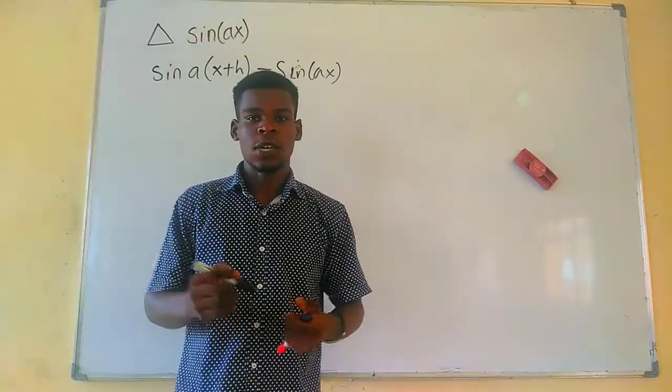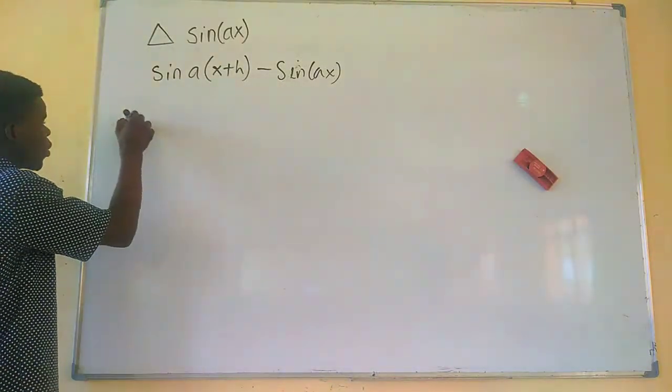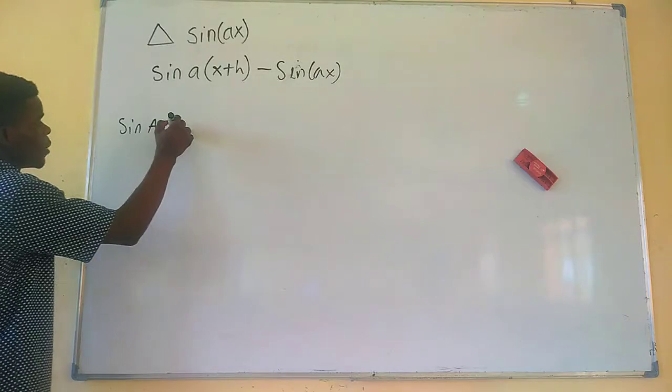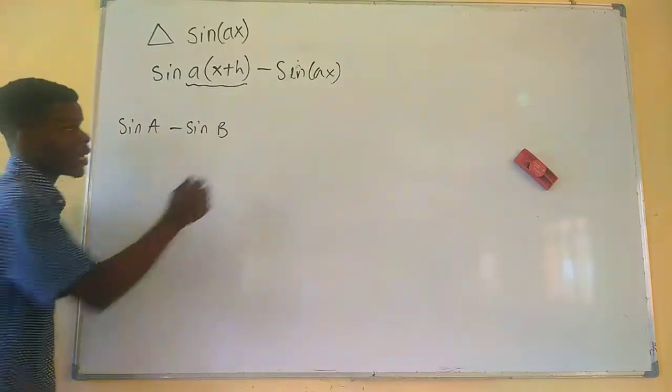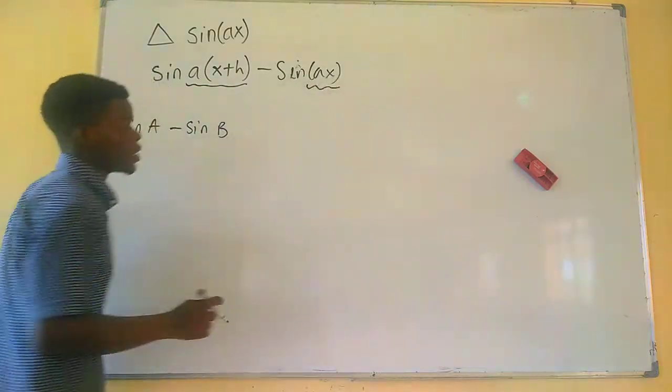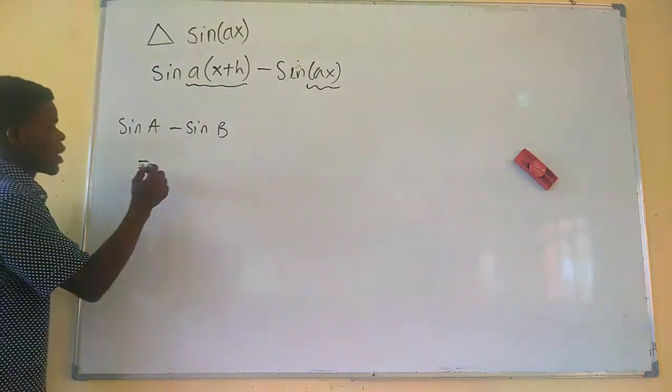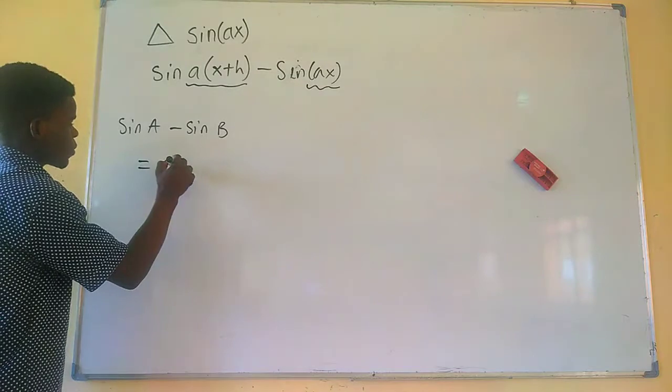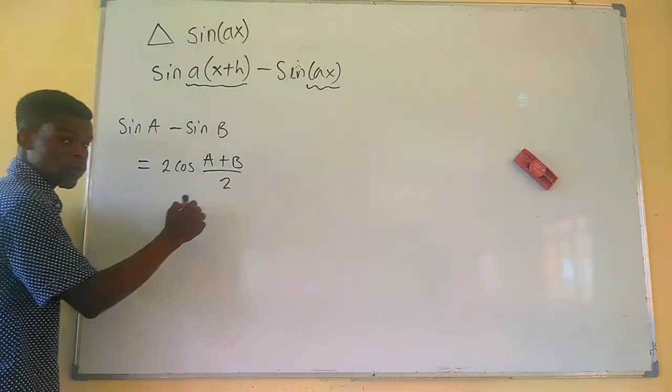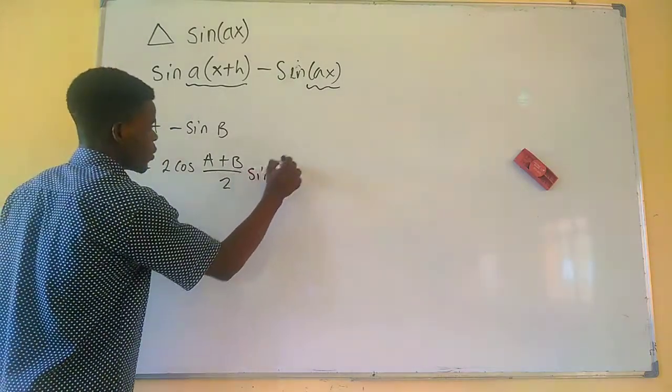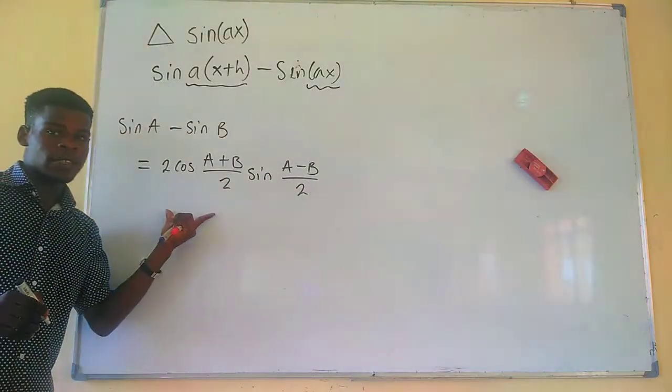Now I want to introduce to you the product sum formula. That's when we have sine of an angle A minus sine of an angle B. Now when the whole of this is a particular angle and this one right here is another angle. So when we have this, it is simply the same thing as 2 cosine of A plus B divided by 2 times the sine of A minus B divided by 2. So this is always the case.